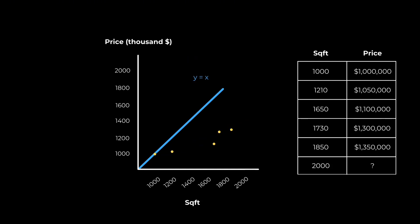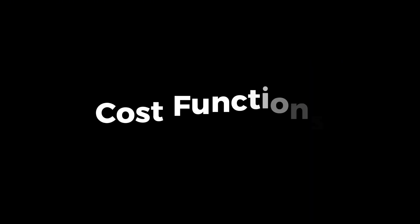Notice how for each line that we draw, there will always be some gap between our predicted values and the actual values. Our goal is to find the best equation to draw the best line that minimizes these gaps. The smaller these gaps, the more accurate our predictions. And to do this, we need to use something called a cost function.